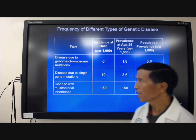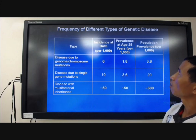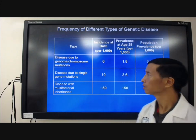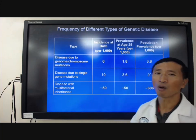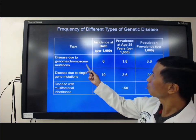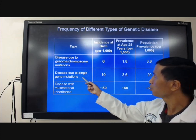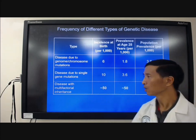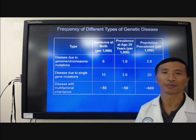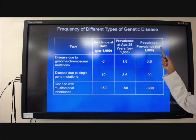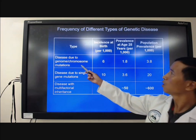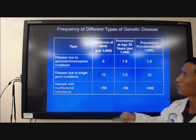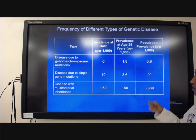This is a table showing the frequency of different types of genetic disease. This column shows incidence at birth per 1000 newborns. Chromosomal disorder has 6 cases, single gene disorder has 10 cases, and multifactorial disorder has around 50 cases. The next column shows population prevalence among 1000 people: chromosomal disorder has around 4 cases, single gene disorder has 20 cases, and multifactorial disorder has around 600 cases.